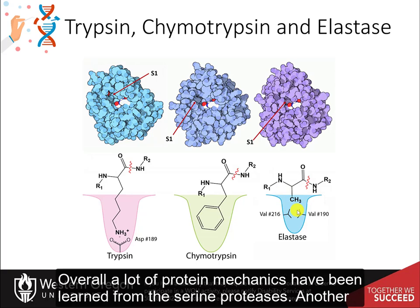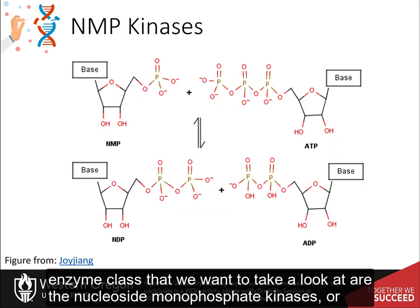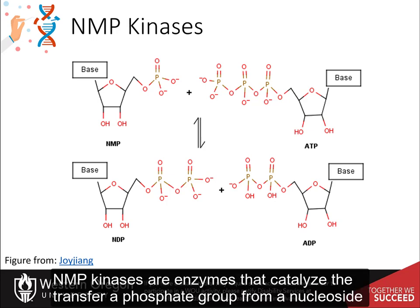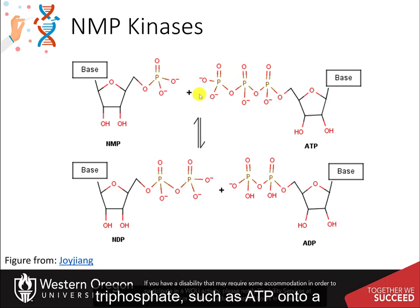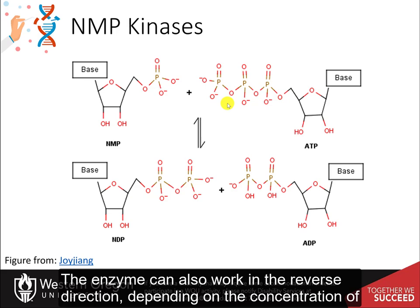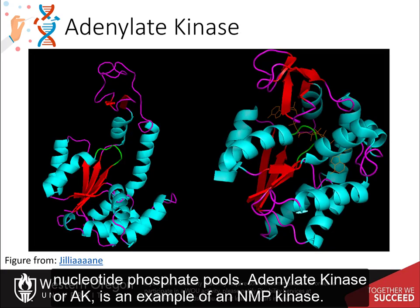Overall, a lot of protein mechanics have been learned from the serine proteases. Another enzyme class that we want to take a look at are the nucleoside monophosphate kinases, or simply NMP kinases. NMP kinases are enzymes that catalyze the transfer of a phosphate group from a nucleoside triphosphate, such as ATP, onto a nucleoside monophosphate, essentially creating two nucleoside diphosphates. The enzyme can also work in the reverse direction, depending on the concentration of nucleotide phosphate pools. Adenylate kinase, or AK, is an example of an NMP kinase.